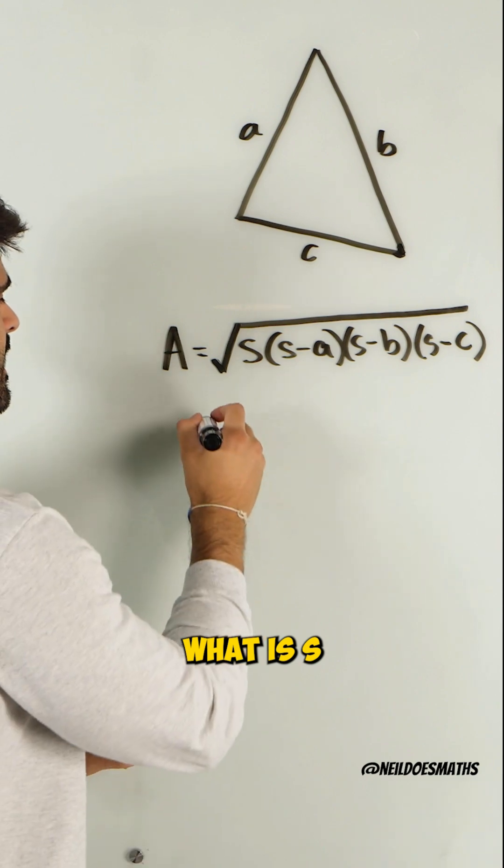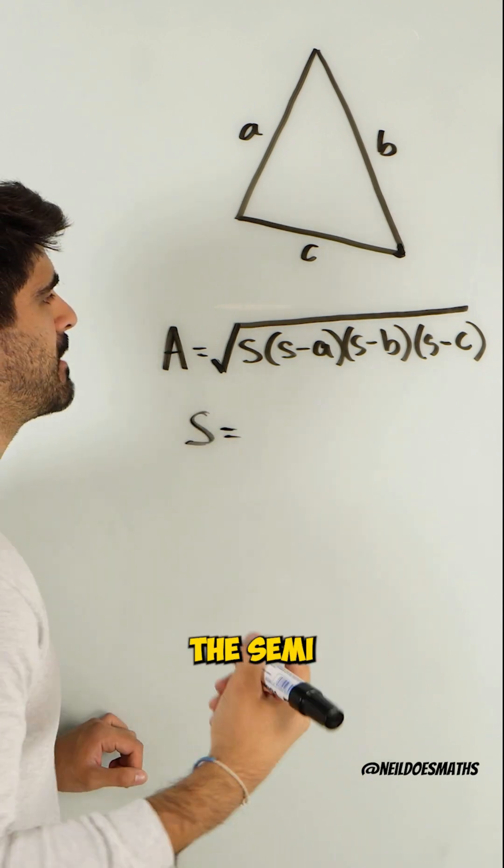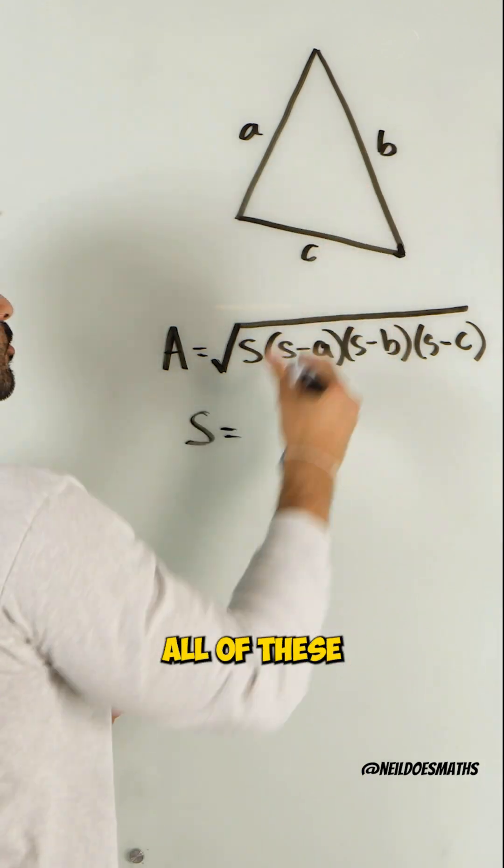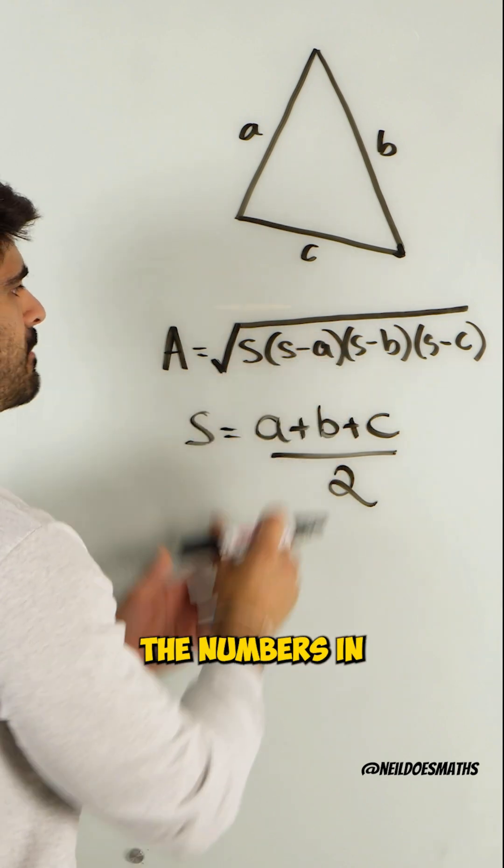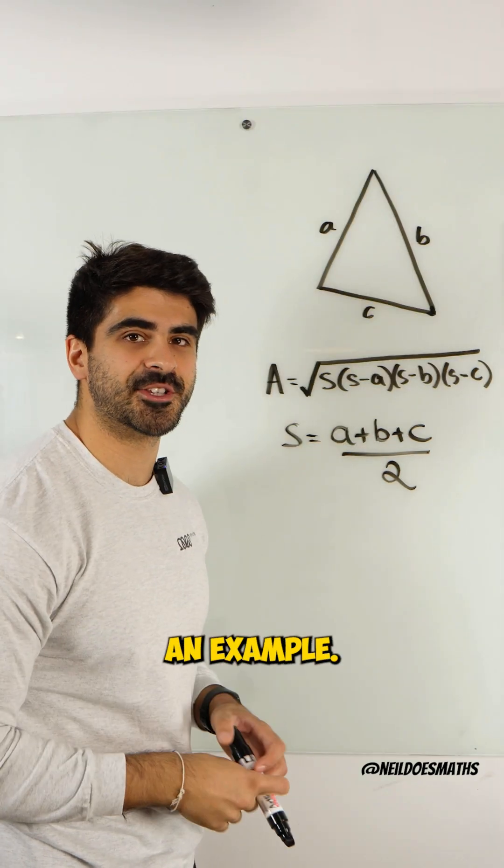Now you may be wondering, what is S? S is known as the semi-perimeter, whereby we add all of these values together and we divide by two. And then all we do is we just sub the numbers in to this formula. Let me show you an example.